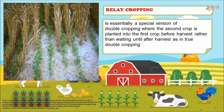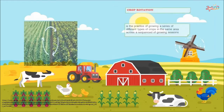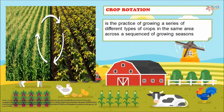Relay cropping is essentially a special version of double cropping where the second crop is planted into the first crop before harvest, rather than waiting until after harvest as in true double cropping. Crop rotation is the practice of growing a series of different types of crops in the same area across a sequence of growing seasons.